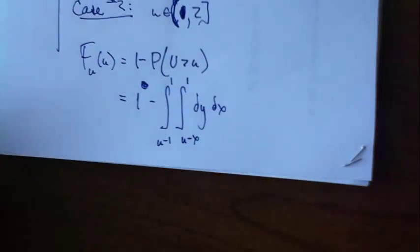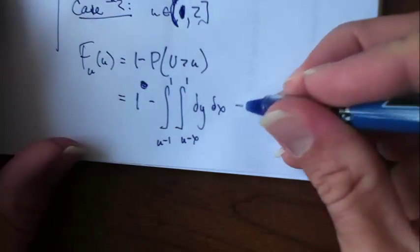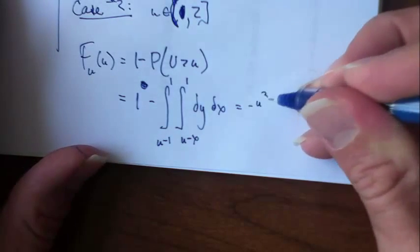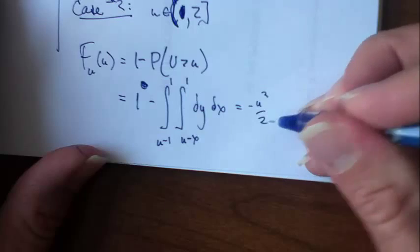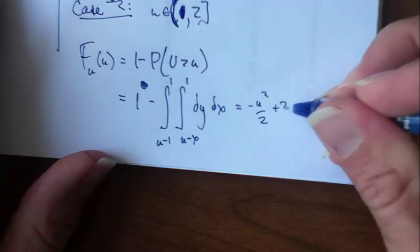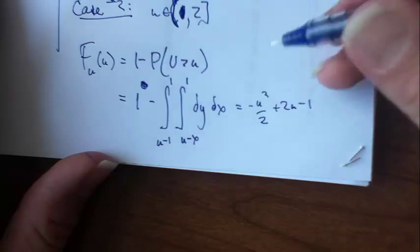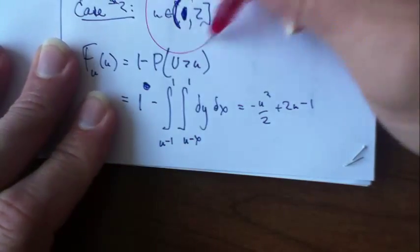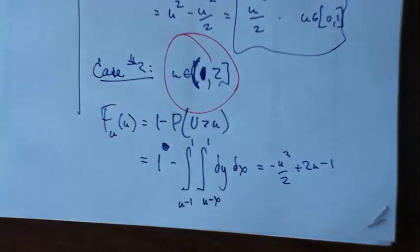You can carry this through and I think if you do that, you'll wind up with negative u squared over 2 plus 2u minus 1. Again, this is for case 2 when u is between 1 and 2.